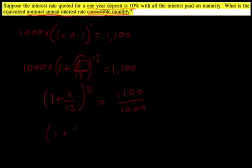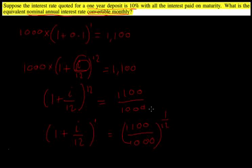So what we do is we power both sides to 1/12. So in this case it's going to be i/12, that's going to be 12 over 12 which is 1.